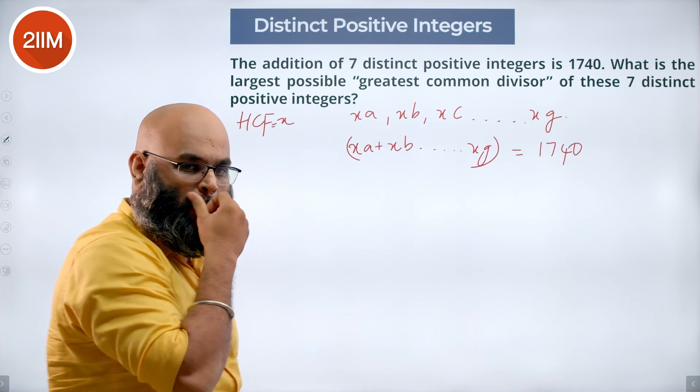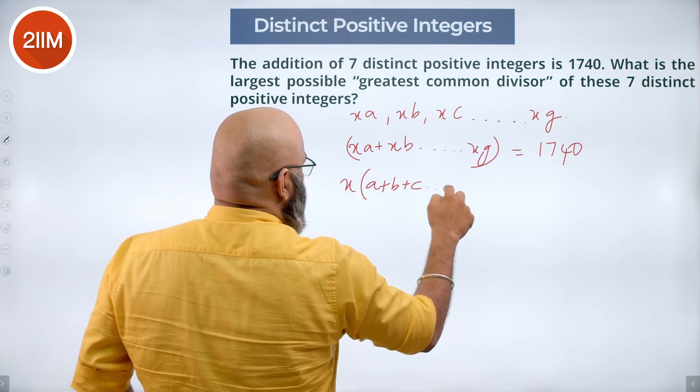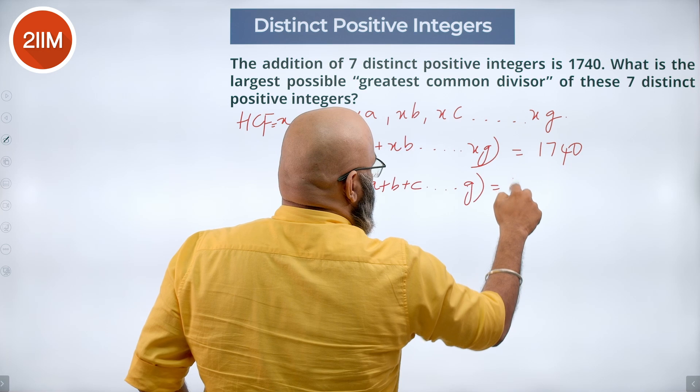If you are taking out this X common, you will end up with X into A plus B plus C till G is equal to 1740.